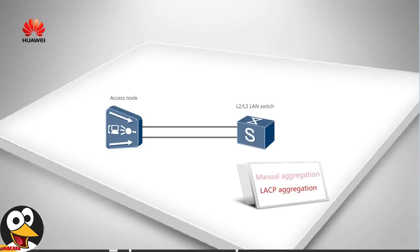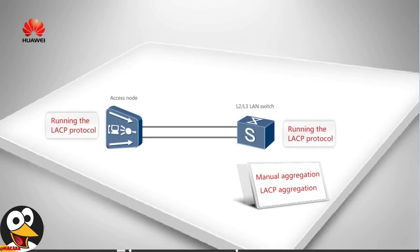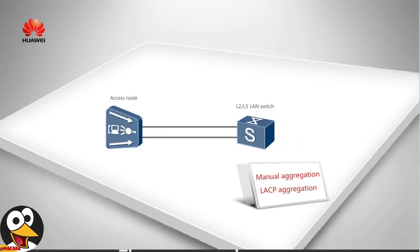In manual aggregation, the devices on both link ends will not run the LACP protocol. In LACP aggregation, the devices will run the LACP protocol, so the LACP aggregation mode controls aggregation groups in a more accurate and effective way. Next, we'll introduce the applications of these two aggregation modes.